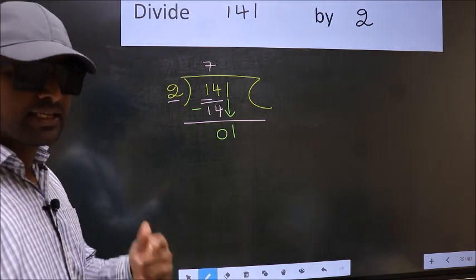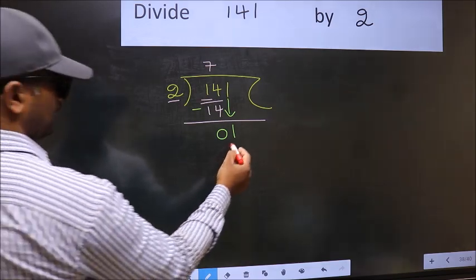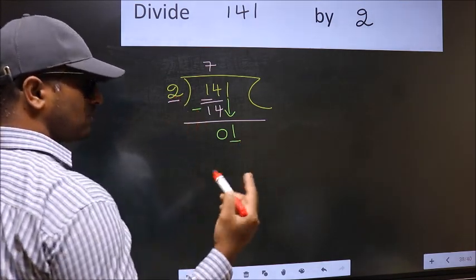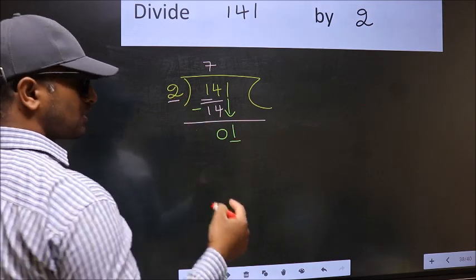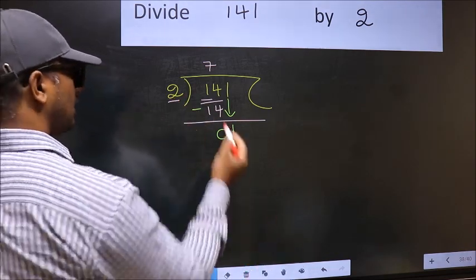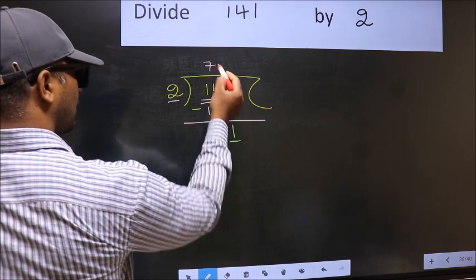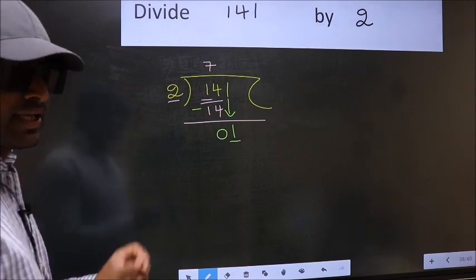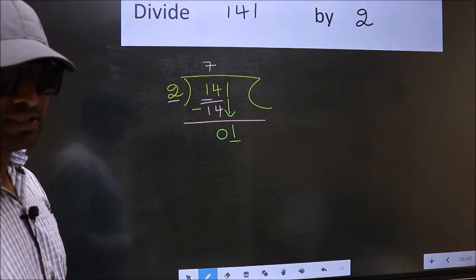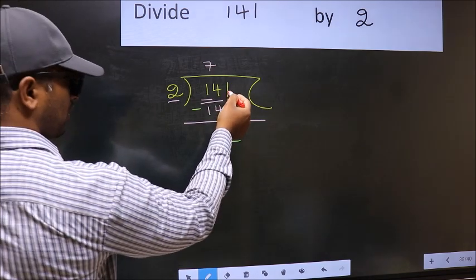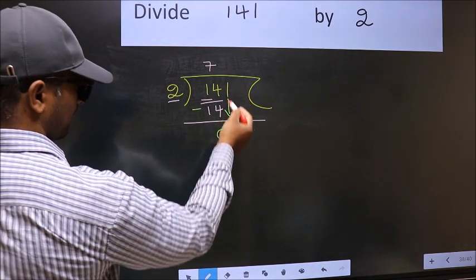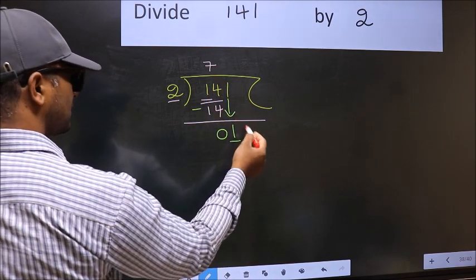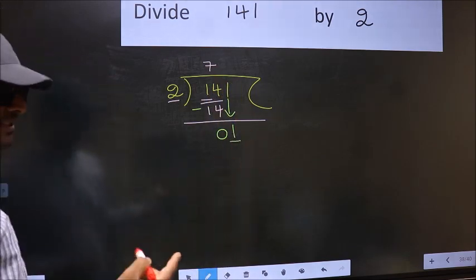And the mistake is this. Here you have 1 and here 2. So 1 is smaller than 2. What many do is they put a dot and take 0 here, which is wrong. And why is it wrong? Just now you have brought 1 down, and in the same step you want to put a dot and take 0. Which is wrong.